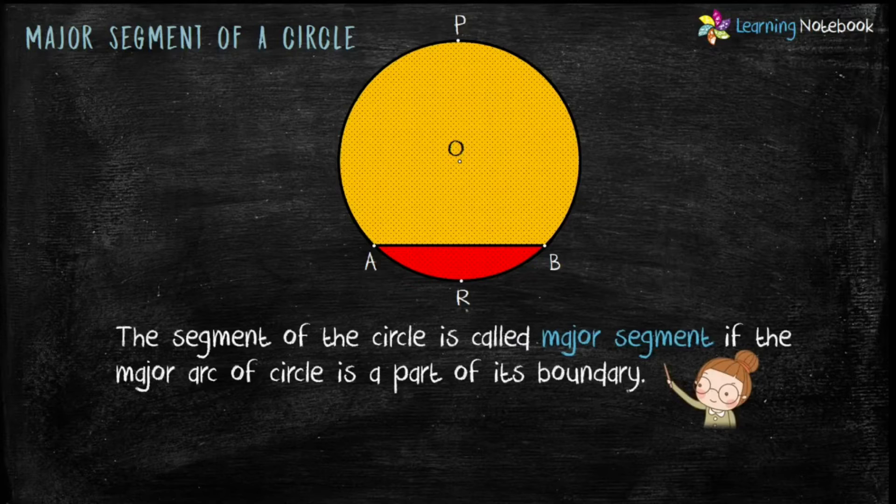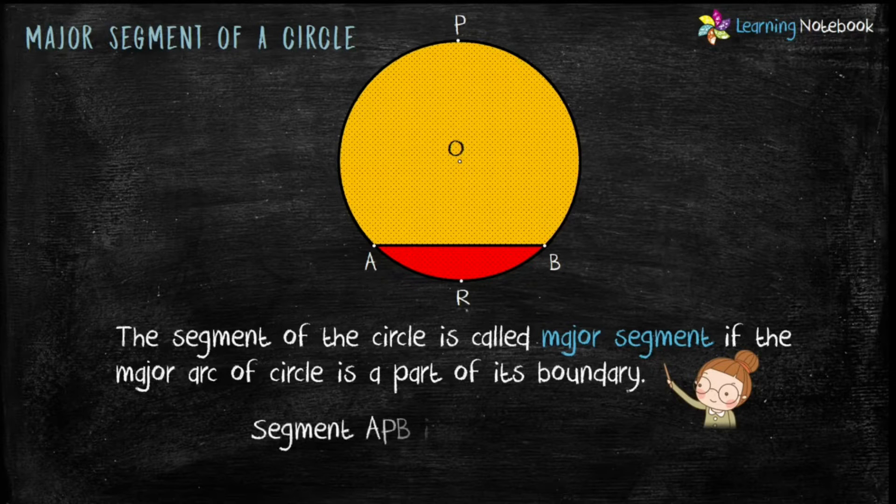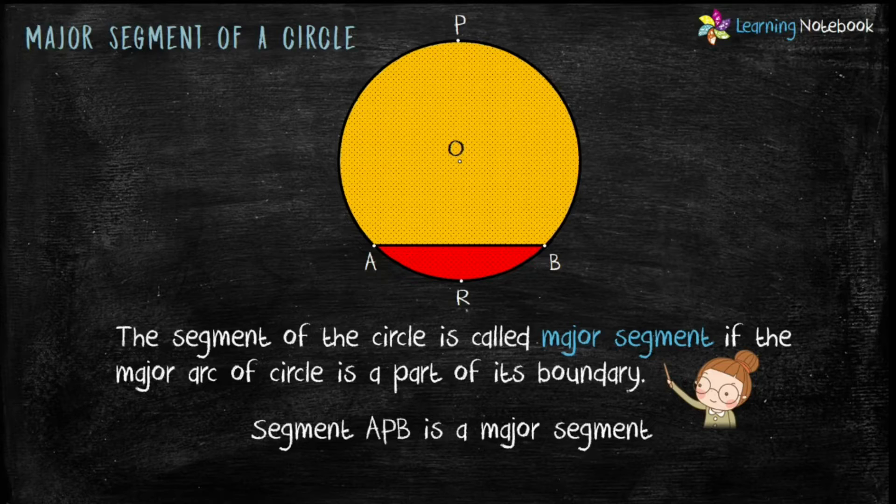In a similar manner, the segment of the circle is called major segment if the major arc of circle is a part of its boundary. Segment APB is a major segment because the major arc APB is a part of its boundary.